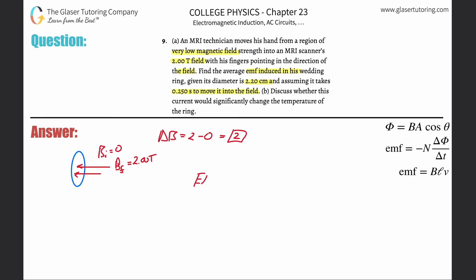The EMF induced will be equal to negative the number of turns of the coil—whatever ring, if it's a ring it's one, there's one turn—multiplied by the change in flux divided by the change in time.